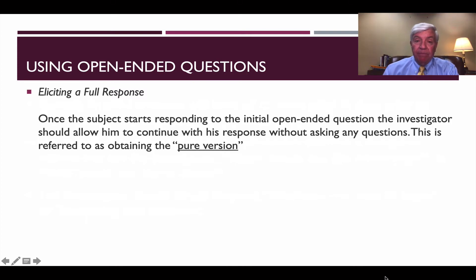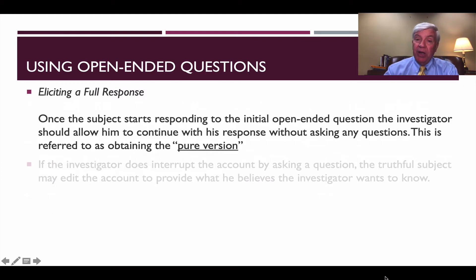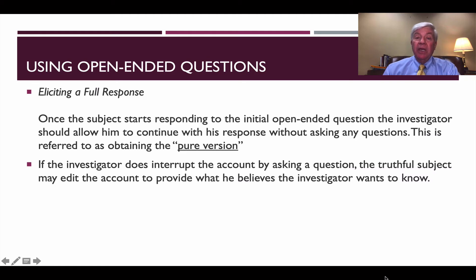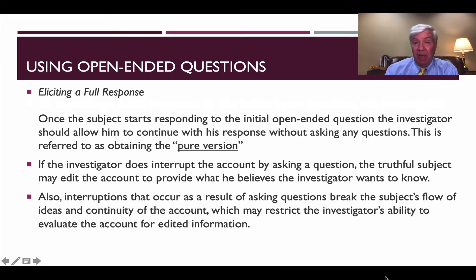Eliciting a full response. Once a subject starts their response to the original open-ended question, the investigator should allow them to continue without interruption. This is securing what we call the pure version — their statement without any interruption or direction by the investigator. If we do interrupt the subject, it may cause the truthful person to rephrase some of their answers. Also, interruptions can break the subject's flow of ideas and continuity of response, making it more difficult to assess when editing may have occurred.